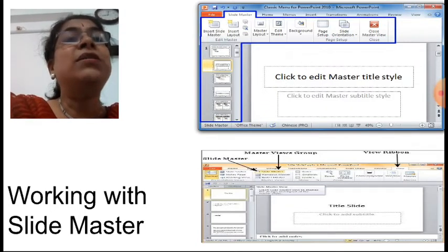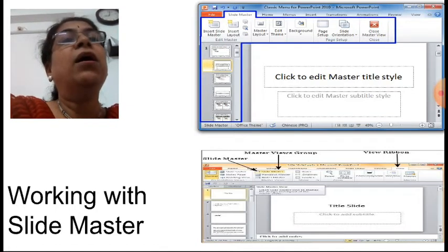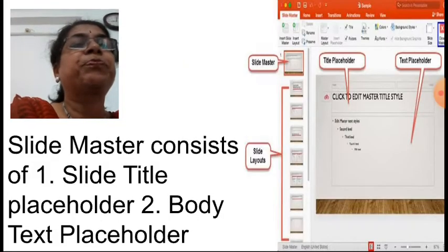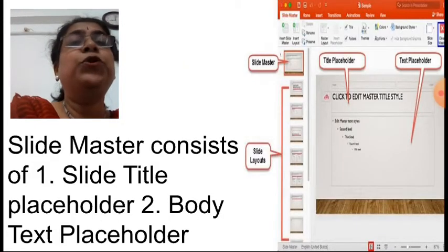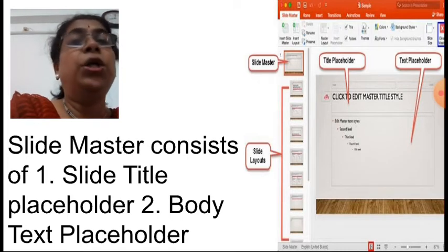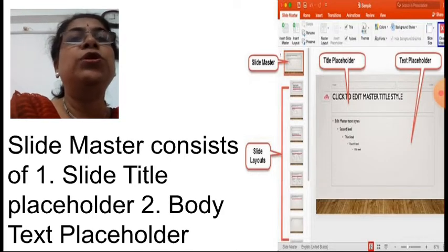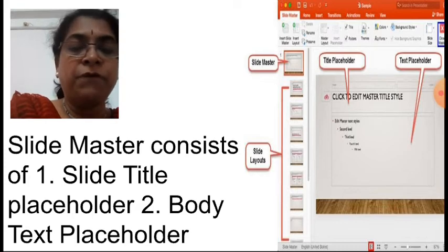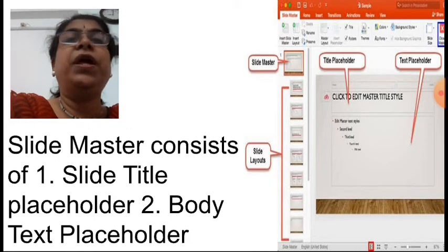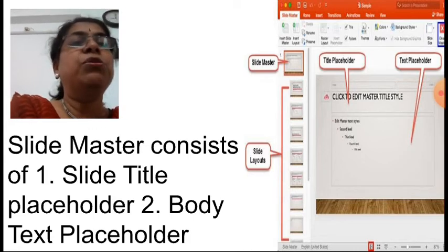Here the slide master option is shown. In the panel, the first slide master slide is there and all other layouts are there for different slides. Slide master consists of two things: the slide title placeholder and the body text placeholder. The title placeholder is on the top of the slide, and the text placeholder is where you specify which placeholders and text you want to enter.